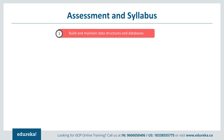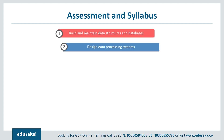The first section of the Professional Data Engineer syllabus is building and maintaining data structures and databases. This includes future advances in data technology, changes to business requirements, awareness of current state and how to migrate the design to a future state, data modeling trade-offs, and schema design. The second section is designing data processing systems.